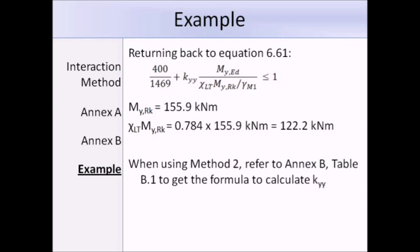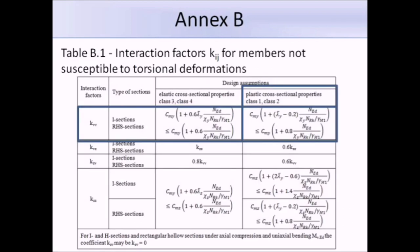Remember, we are using method 2, so we need to refer to table B.1 of Annex B. We know our section is class 1, and we are looking to work out the value of KYY, so we need to use the formula highlighted in table B.1.